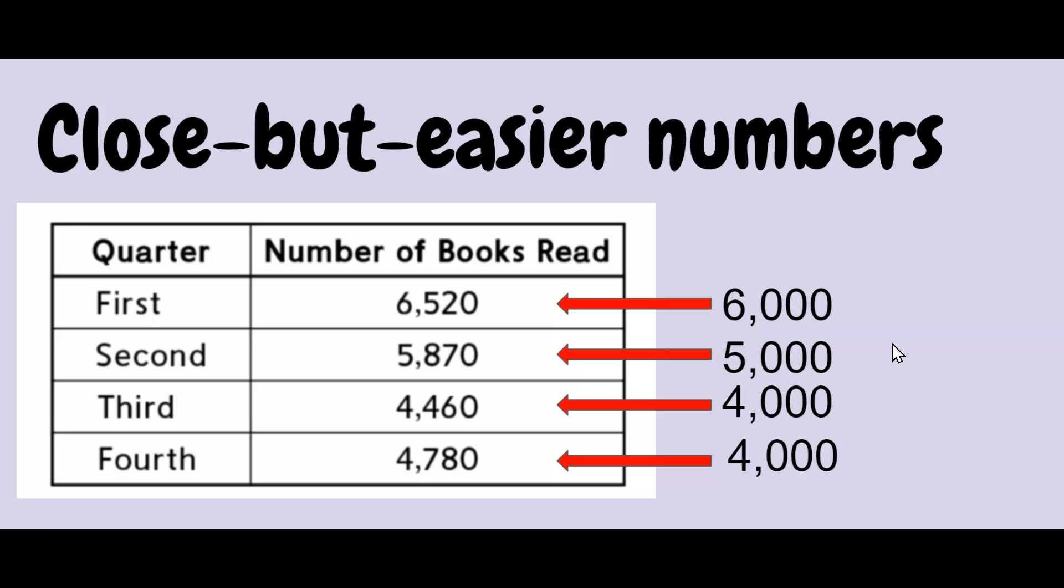Well, these are really friendly numbers that are easy to work with with all these zeros on them. I looked at the thousands, and I chose just the thousands for my close but easier numbers. And when I add just the thousands together, that's 19,000.